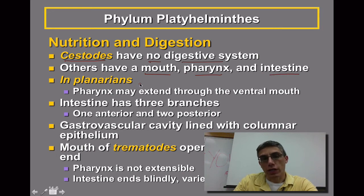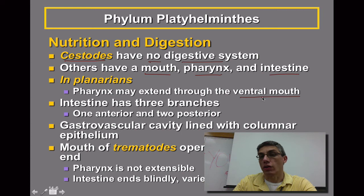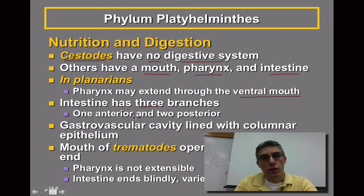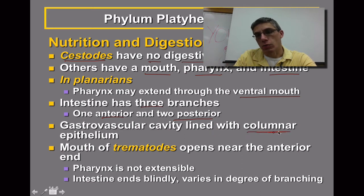In planarians, the pharynx — the part of the animal between the mouth and the intestine — is able to extend through the ventral mouth of the animal. What's unique about planarians is that they don't have an anterior mouth; their mouth is actually located on the bottom of the animal's body. The intestine of planarians actually has three branches: one anterior and two posterior branches. The gastrovascular cavity is lined with what we call columnar epithelium, which is the tissue lining the digestive cavity.